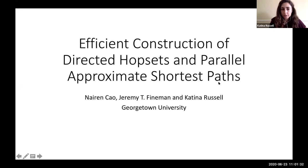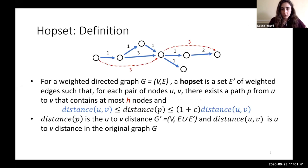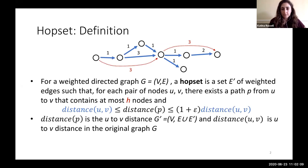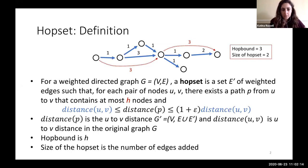First I'll talk a little bit about what hopsets are — a brief definition and example — and then I'll explain our result. A hopset is for a directed graph. It is a set of weighted edges such that for each pair of nodes U, V, there's a path P that goes from U to V that contains at most H hops, and the distance of P is at most a 1+ε approximation of the distance from U to V in the original graph and no shorter than the distance from U to V in the original graph.